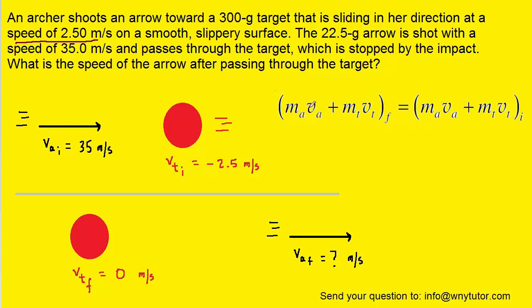Of course, momentum is mass times velocity. We've used subscripts of a for the arrow and t for the target and then f for final and i for initial.